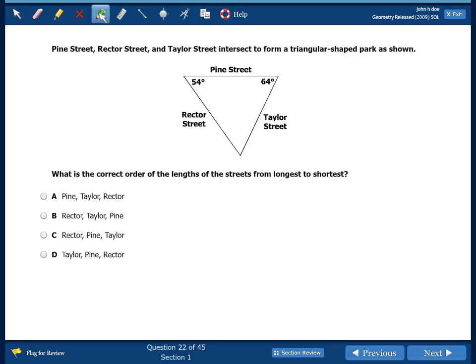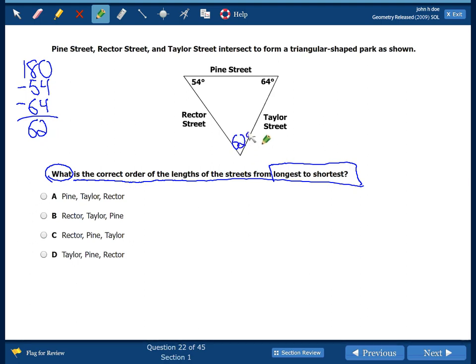Question 22, we want to find that keyword. What is the correct order of the lengths of the streets from longest to shortest? So we want to find the longest side to the shortest side. To do this we need to find the largest angle first. So we need to figure out the missing angle. 180 minus 54 minus 64 gets us that missing angle of 62. So to find the longest side we pick the biggest angle. So this is the largest angle. And we go across from the largest angle so our largest street is Rector. Our next largest angle is 62, across from that is Pine, and our smallest angle is 54, across from that is Taylor. So the order should be Rector, Pine, Taylor.